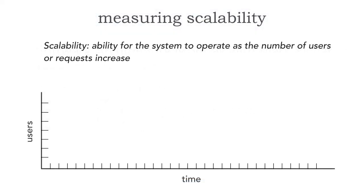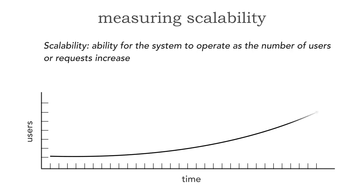When we talk about scalability in any kind of architecture or system, scalability is defined as the ability of the system to operate as the number of users or requests increase. Over time we can see an increase in users or requests and the ability for the system to operate. What does this actually mean? If we want to determine that our systems will actually scale, or demonstrate that they are scaling, what do we measure? Let's investigate that in this lesson.